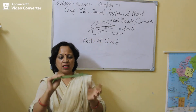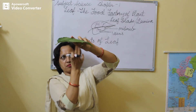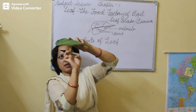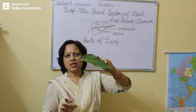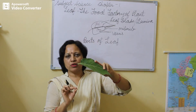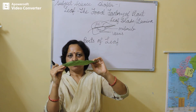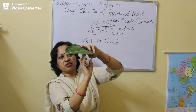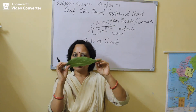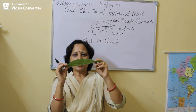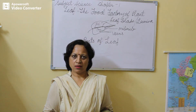Ab is leaf ke neeche ka portion hota hai — yeh iska under surface hai. Ismein small pores ya openings hoti hain, jisse hum bolte hain stomata. Iske under surface mein small openings ya holes hoti hain jisse bolte hain stomata. Yeh gases ki exchange mein help karti hain.